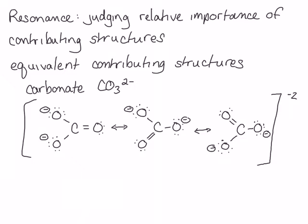Sometimes there are major and minor contributing structures to a resonance hybrid because the different structures are of different energies. Basically, the lower the energy of a contributing structure, the more stable it is, and the larger a contribution it makes to the overall resonance hybrid. So how do we judge the relative importance of contributing structures? There are some rules.